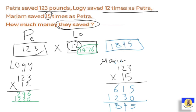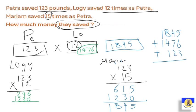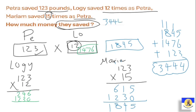Now we add all three together: 1,845 plus 1,476 plus 123. Starting the addition: 6 plus 5=11, write 1 carry 1; 5 plus 7=12 plus 2=14, write 4 carry 1; 9 plus 1=10 plus 4=14, write 4 carry 1; giving 3. So the total money they all have is 3,444 pounds.